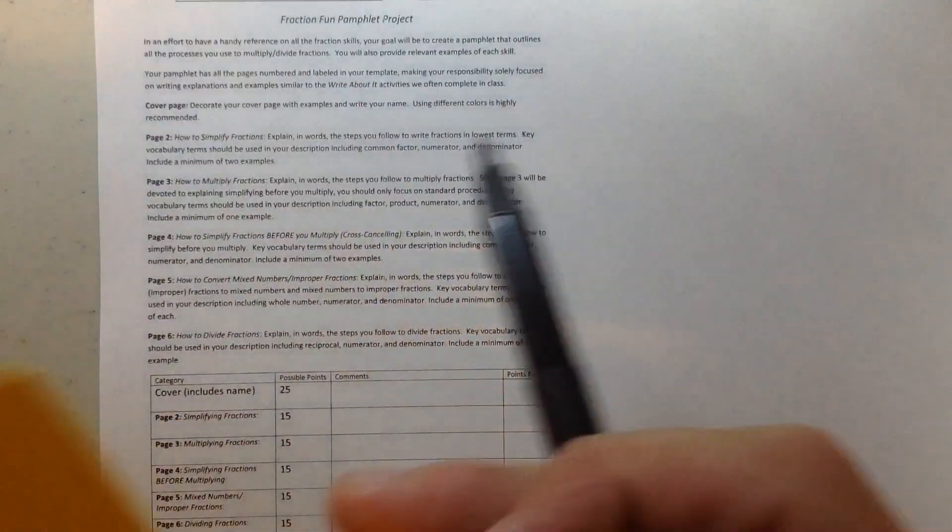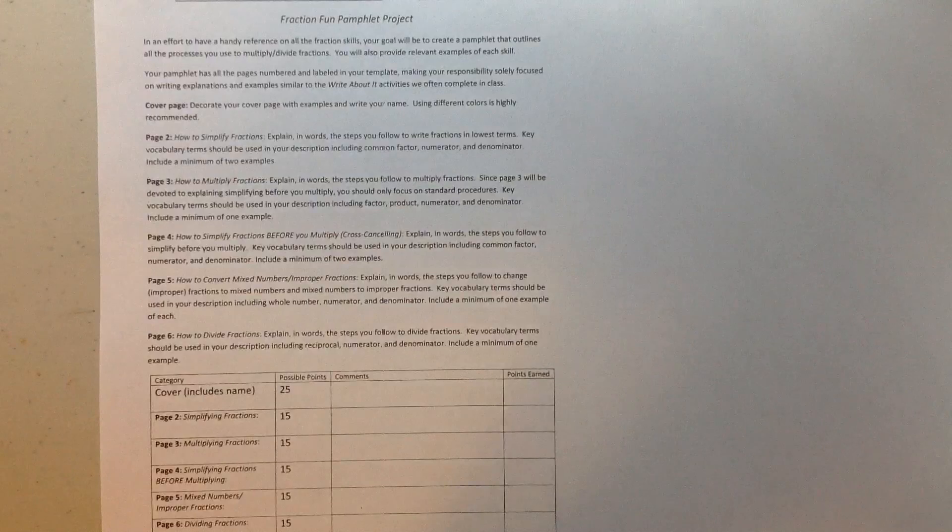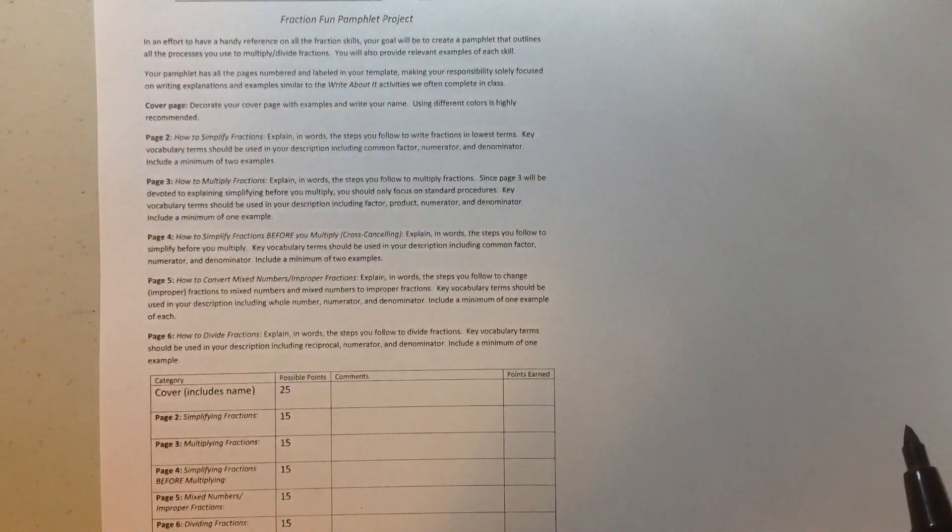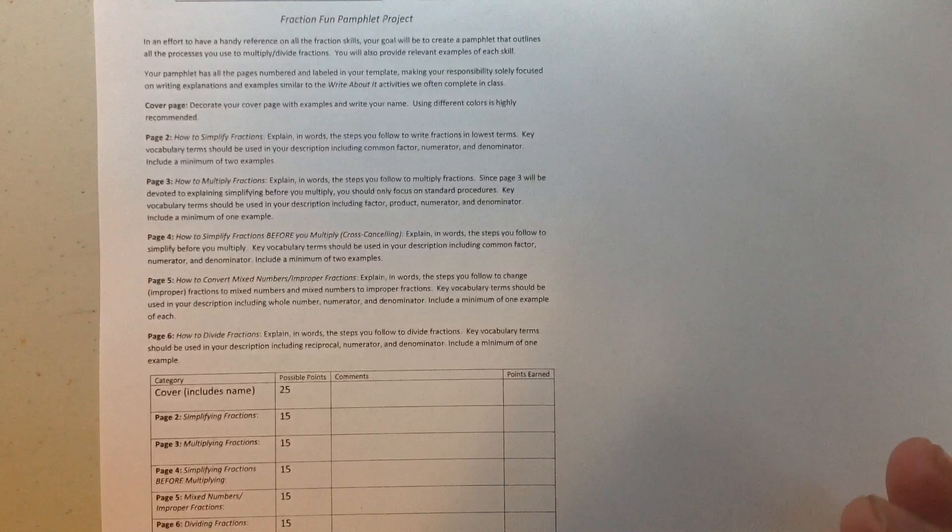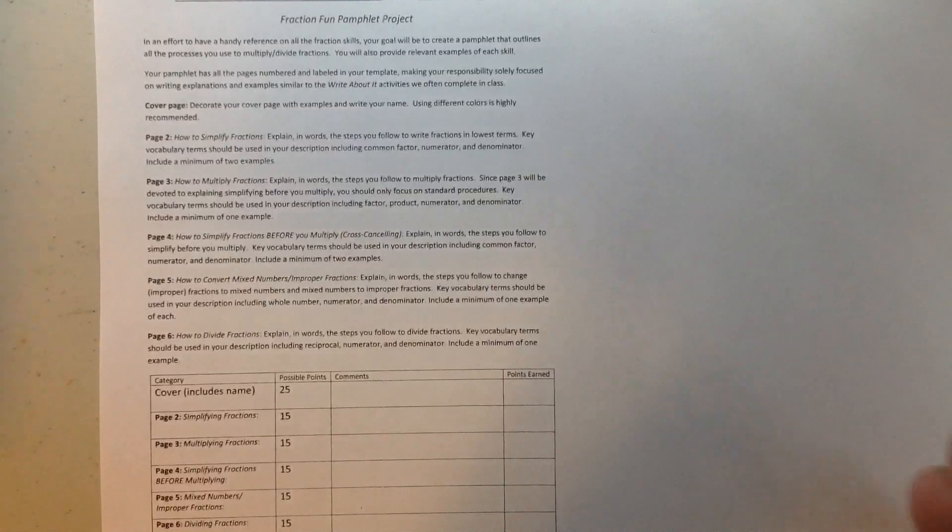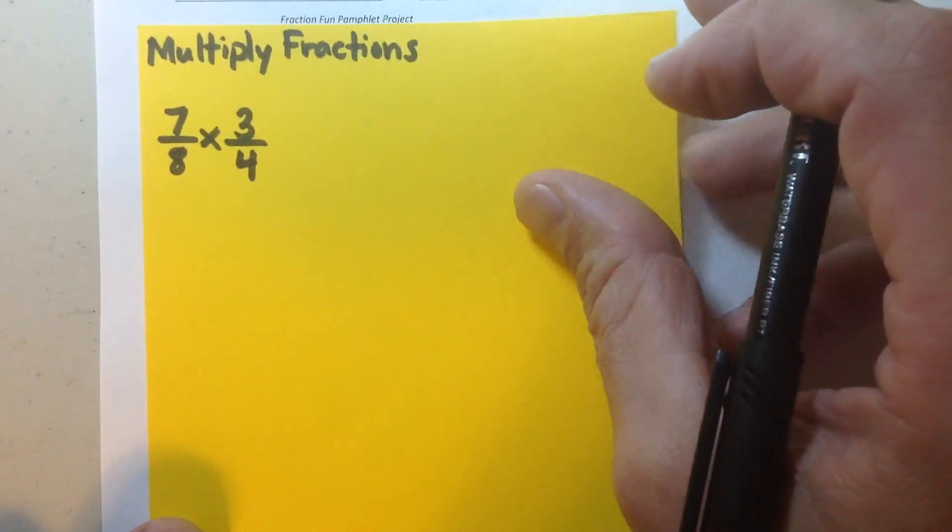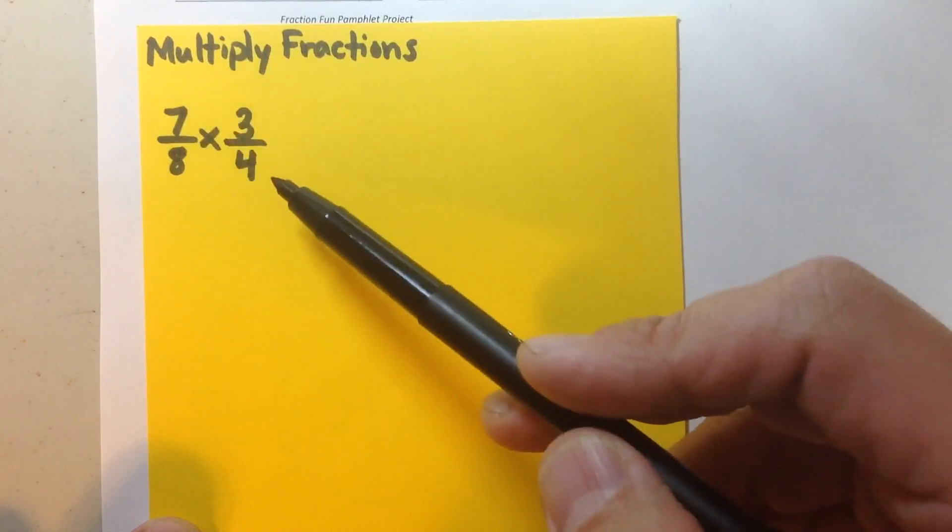The next goal in the next page is how to multiply fractions. You'll notice that it says explain in words the steps you follow to multiply fractions. Now there's going to be another page devoted to explaining cross-cancelling or simplifying on the diagonal. So I would strongly encourage when you make your example for multiplying fractions, you only need one here, is to just focus on fractions that you know are not going to simplify. You know from your experiences in class, fractions that have no common factors on the diagonal is the way to go here.